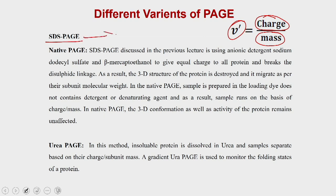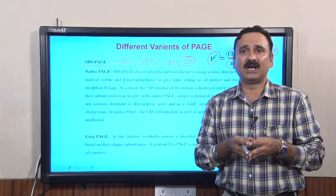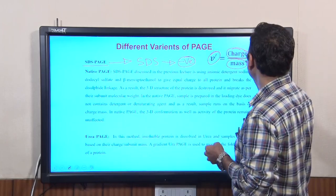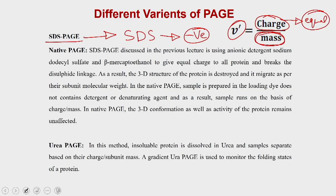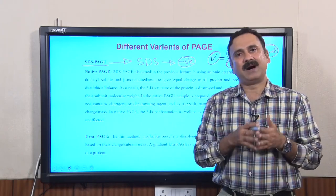In SDS-PAGE, SDS gives equal negative charge to all proteins, so the charge component is the same for all. As a result, proteins migrate based on their molecular weight. The higher the molecular weight, the slower the protein runs; the lower the molecular weight, the faster it runs — because electrophoretic mobility is inversely proportional to the mass of that protein.